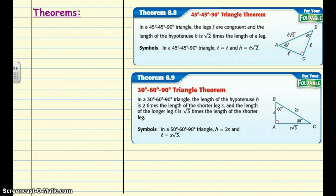There are a couple of theorems to take a look at. The first one is about 45-45-90 triangles. The big thing to remember is that if we know these are 45-degree angles, then the legs are the same, and the hypotenuse is whatever the leg length is times the square root of 2. That's the first one.